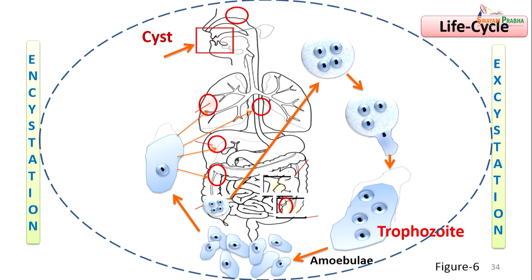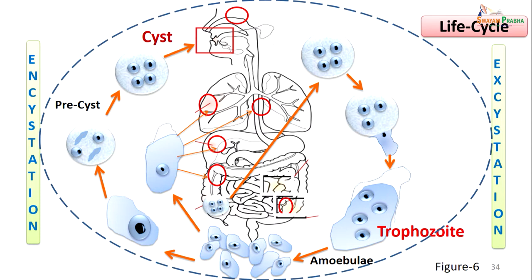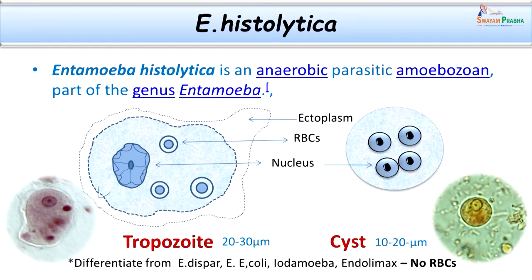The amoebulae attack intestinal as well as extra-intestinal sites. The trophozoite form can develop lesions not only in the intestine but can also gain access through the circulation into surrounding or distant parts and cause abscesses. After some time, the trophozoite starts developing into a cyst form — this part of the cycle is called encystment. The single nucleus divides and matures into a quadrinucleate cyst, ready to infect the next person.